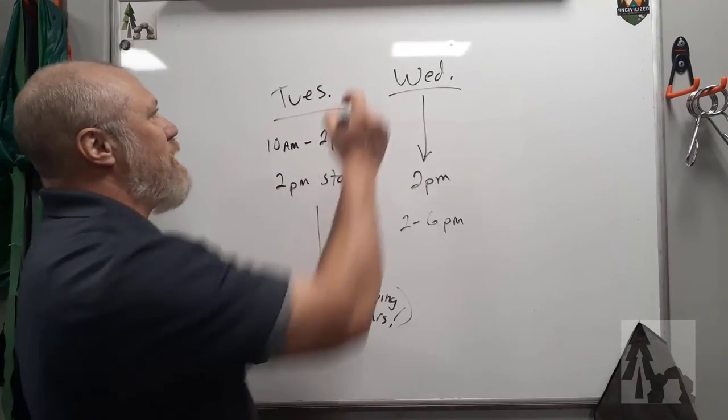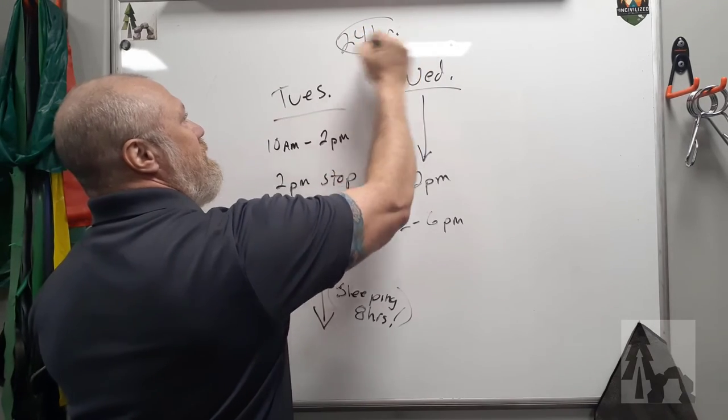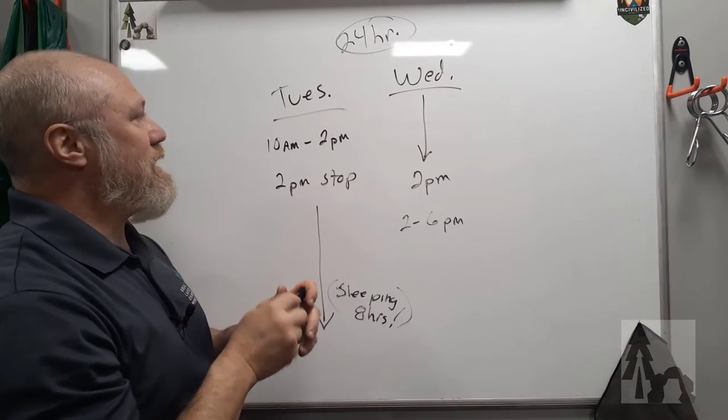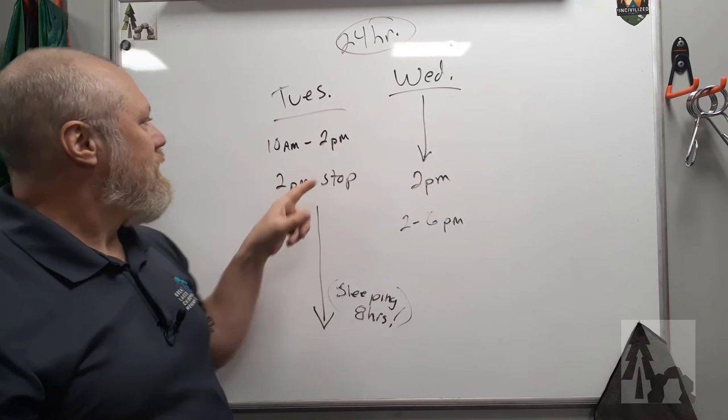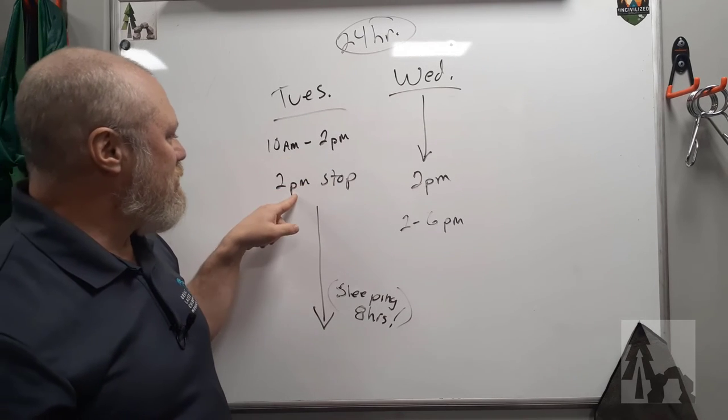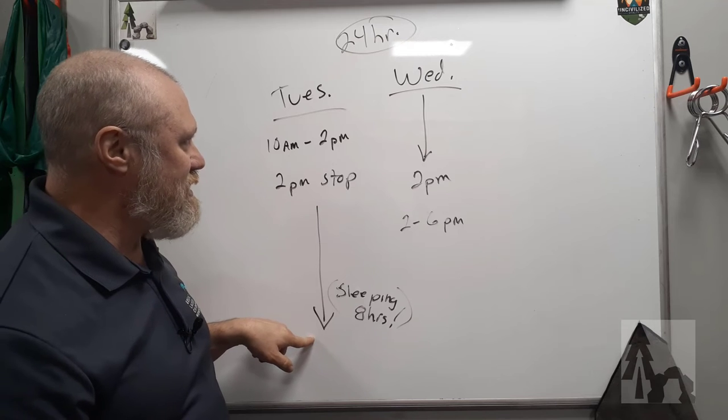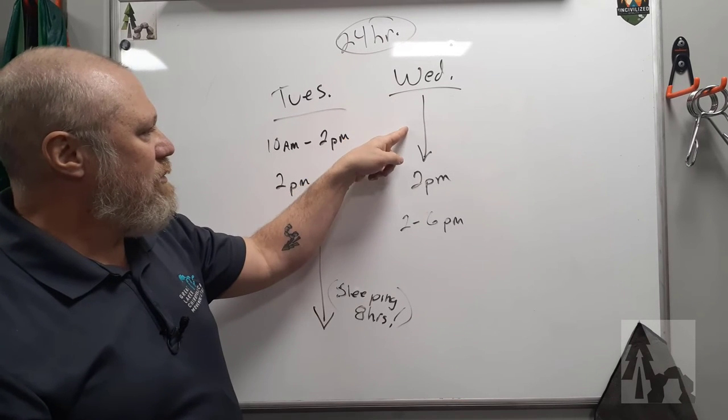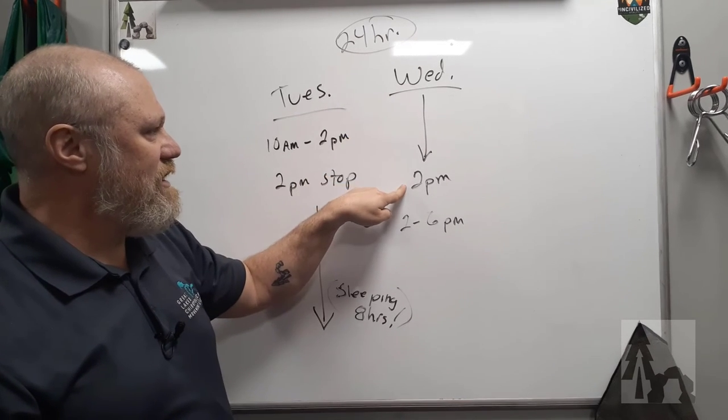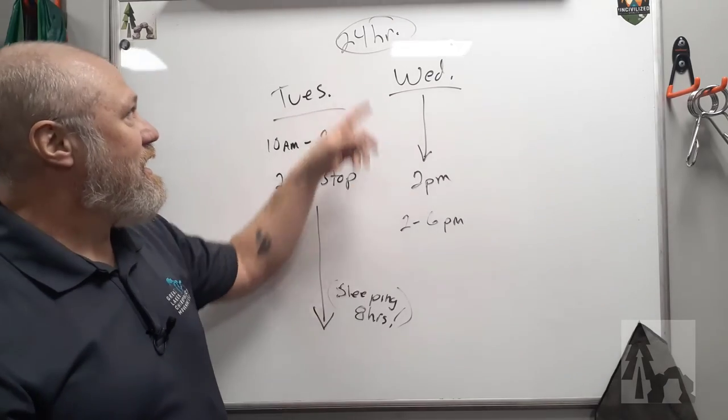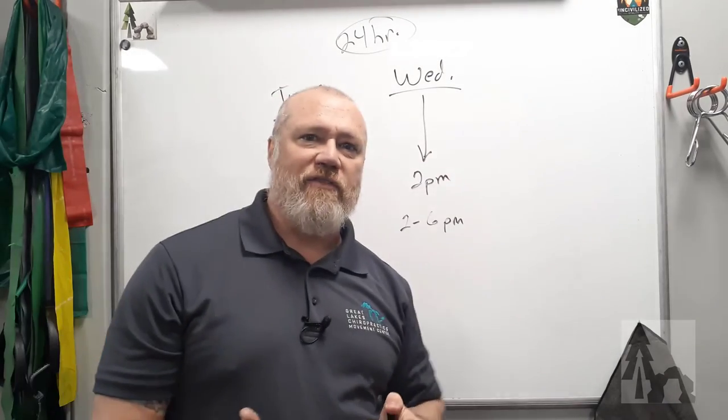So a simple 24 hour fast that you could do once a week to get a little double the whammy of your 16 hour fast is just eat normally until 2 p.m. Stop eating. Go to sleep that night. A few 6 to 8 hours later. You sleep most of the night. You wake up in the morning. Just skip breakfast until you start eating at your normal period again. And now you've cracked out your first 24 hour fast.